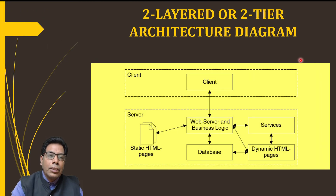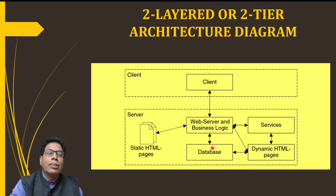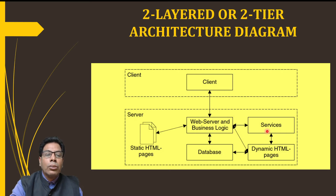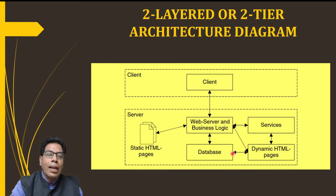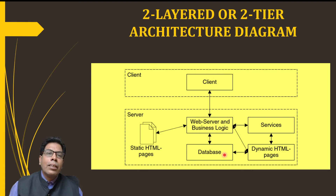In the diagram, the client is connected to the web server and business logic, which is connected to the database, static HTML pages, dynamic HTML pages, and also to the services. All these components on the server side interact with each other, and whatever request is sent by the client is processed either directly with static HTML pages or with dynamic HTML pages which access the database for data. This is how the two-layer or two-tier architecture works.